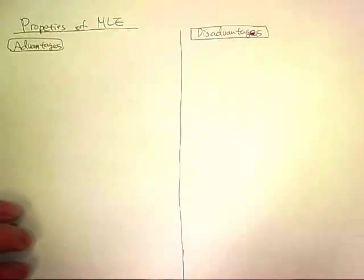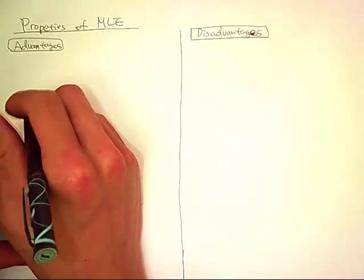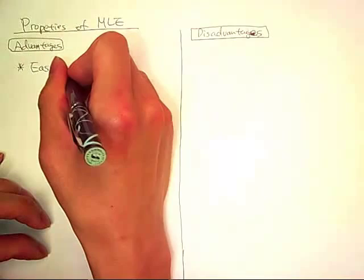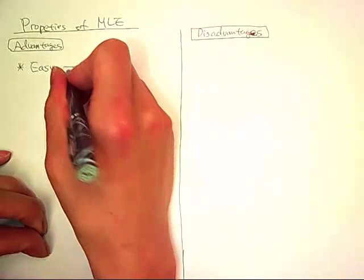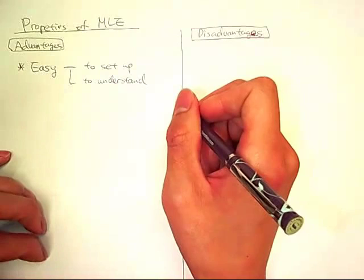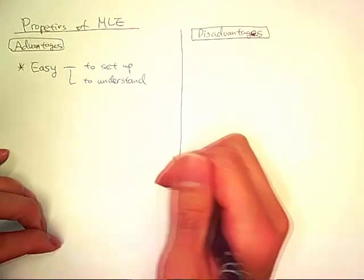In this video we're going to talk about the properties of MLE. First, we're going to talk about the advantages of MLE. So MLE is easy - it's easy to set up the likelihood function and easy to understand the results. Oftentimes the results are very intuitive and easy to understand.